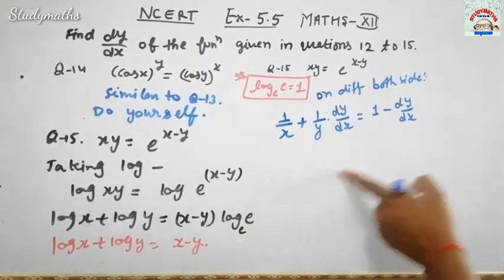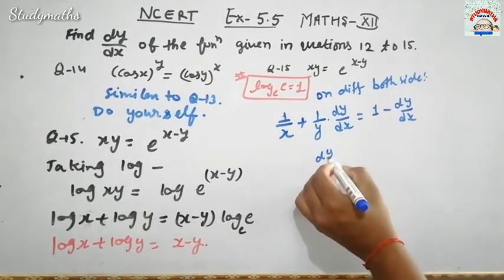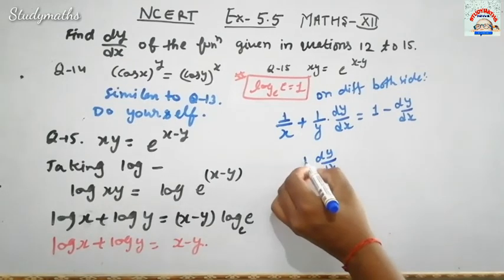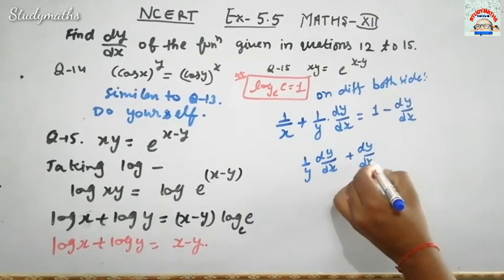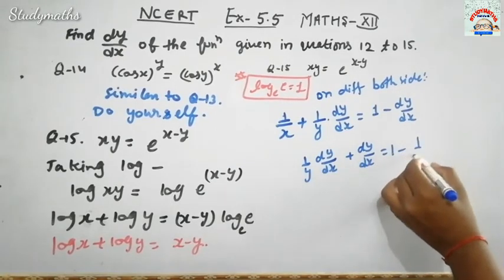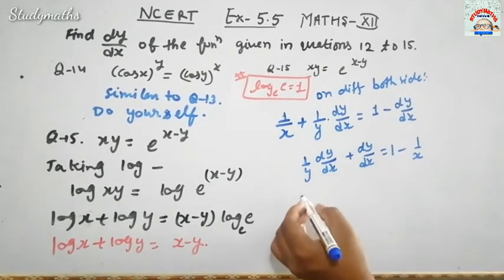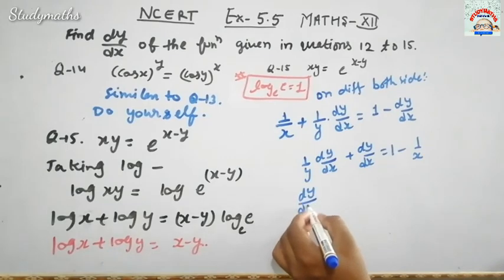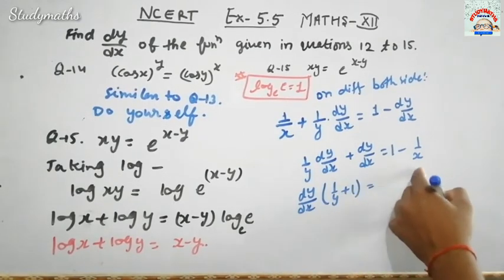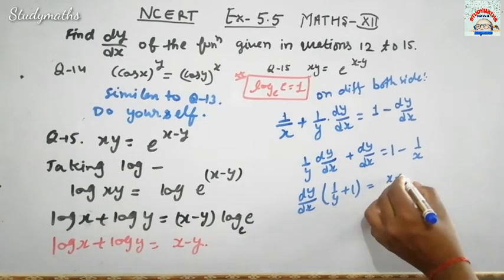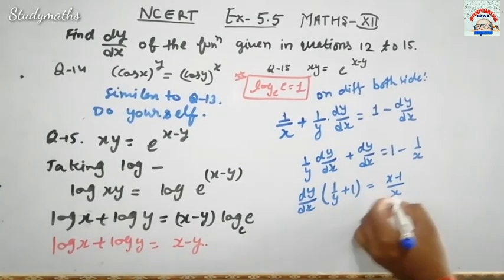Transpose करके dy by dx, X को इधर transpose कर दीजिए. So dy by dx और यह 1 by Y plus dy by dx equals 1 minus 1 by X. dy by dx को common कर लीजिए, so dy over dx, 1 by Y plus 1 equals LCM करेंगे, यह होगा X minus 1 upon X.